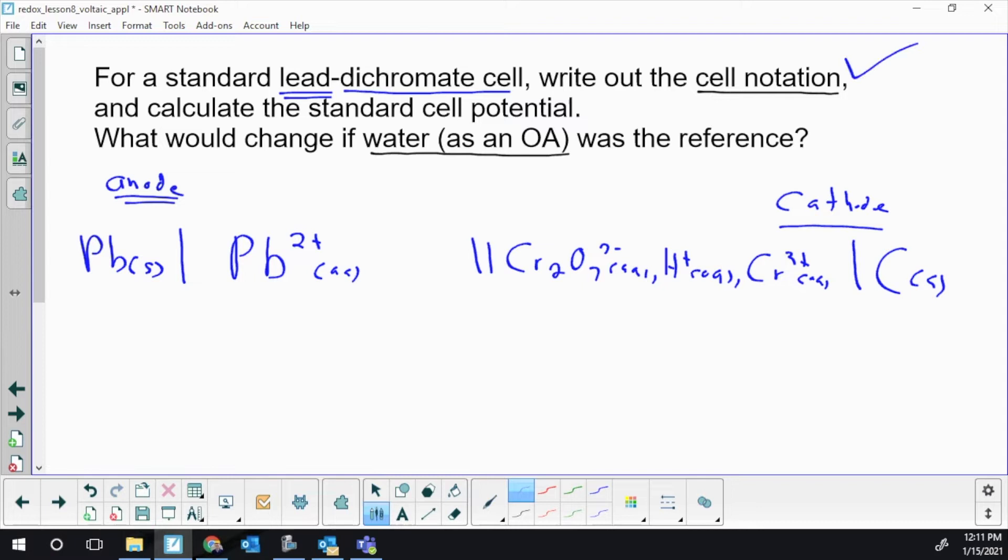Now I need something to connect a wire to at the cathode, and I do not have any solids, so I need to use one of those inert electrodes. Can anybody tell me an inert electrode? Carbon. So that is the cell notation for this standard lead-dichromate cell. If you look at the way it was written out, it started with the anode first and cathode second. That's the format you're going to see in your questions in the book—anode, cathode, just like cell notation.